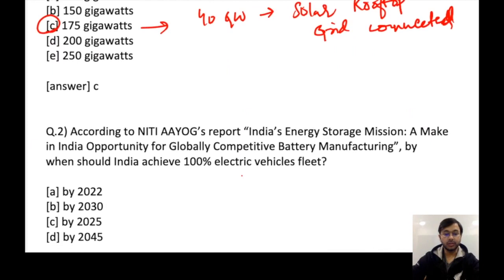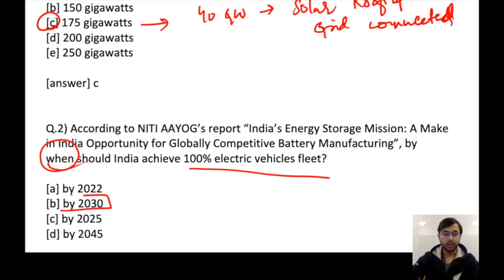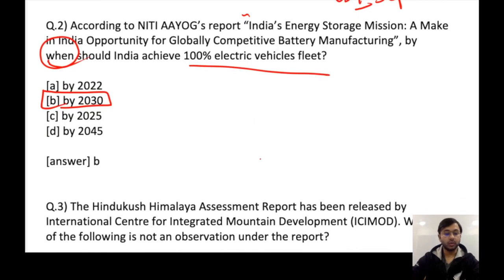Next question: according to NITI Aayog's report, 'India's Energy Storage Mission: A Make in India Opportunity for Globally Competitive Battery Manufacturing,' by when should India achieve 100% electric vehicles fleet? The answer is B — by 2030 is the target for India to achieve 100% electric vehicles as per this report. This report is also available in ESI September 2019. Please cover that. That is the homework for you.